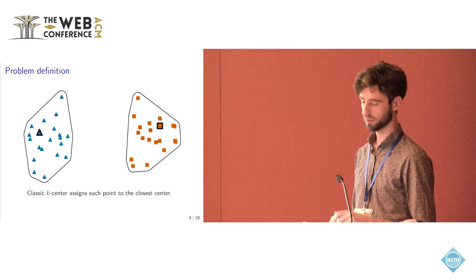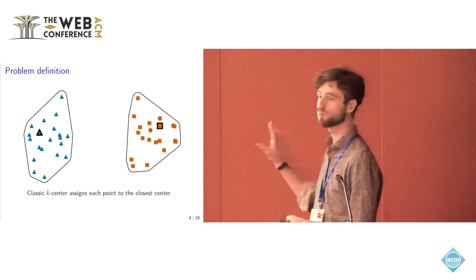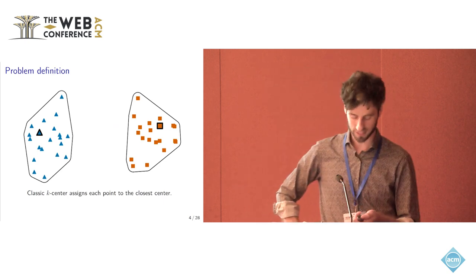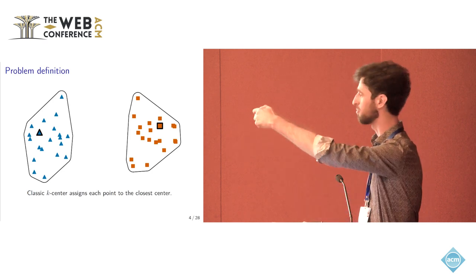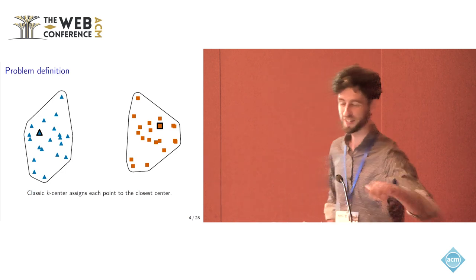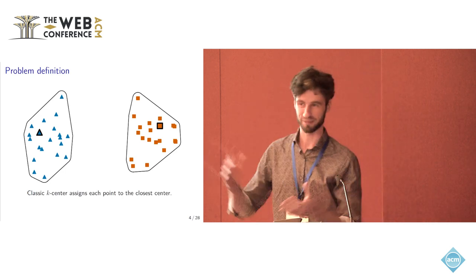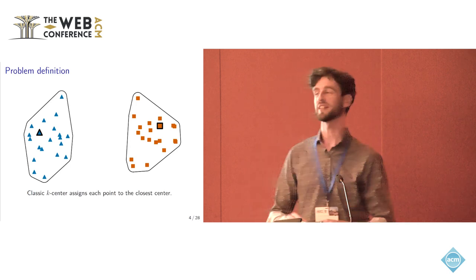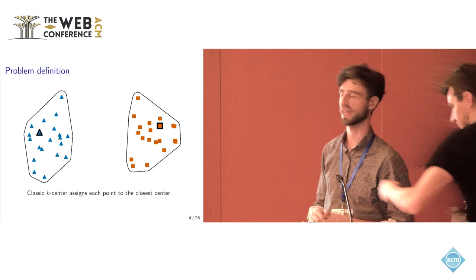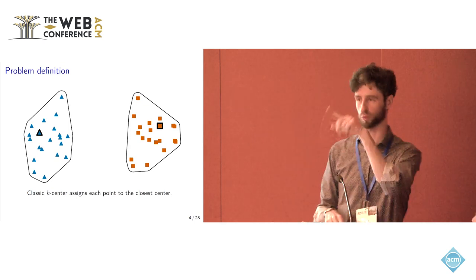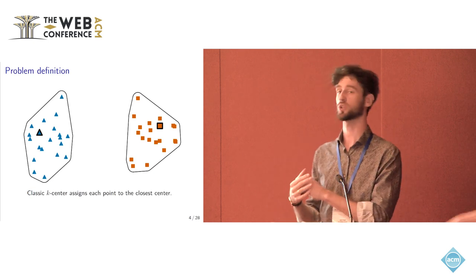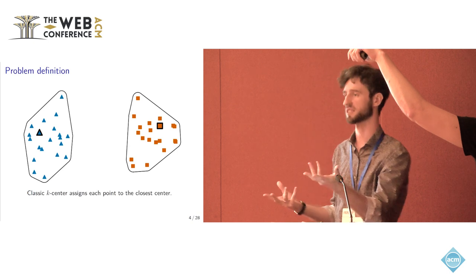Out of the several different problems you might consider for fairness, we focus here on clustering, specifically k-center clustering. You have a set of points in a metric space and your task is to find a set of k centers. In this case, we set k equals 2, and those are the ones outlined with a black line. Then you want to assign points to these centers so that the radius is minimized, so that the maximum distance is minimized.